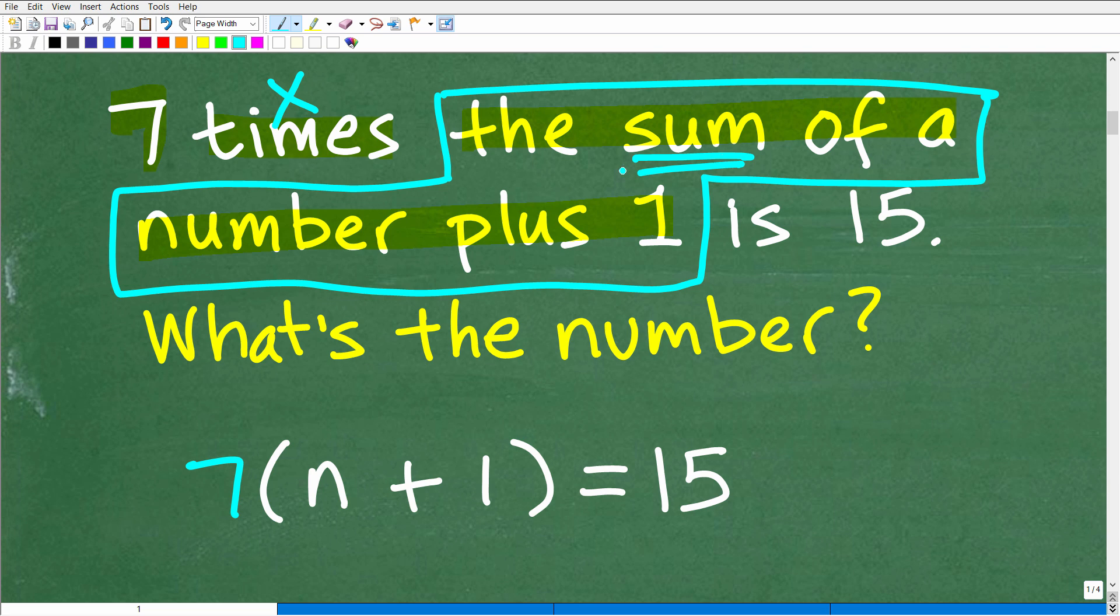Okay, so the sum of a number plus one. So anytime you hear the sum or difference, you need to put parentheses around a group. Okay, so this means that there is some number. Okay, and we need to come up with a variable for that number. Right? So I'm just going to use the variable n. So n plus one, and then we're going to put parentheses around it. So seven times the sum of a number, or n plus one, is, now anytime you see the word is, that is always equal to, or the equal sign, is 15. Okay, and of course, what's the number? What we're really looking for is, what is the value of n?